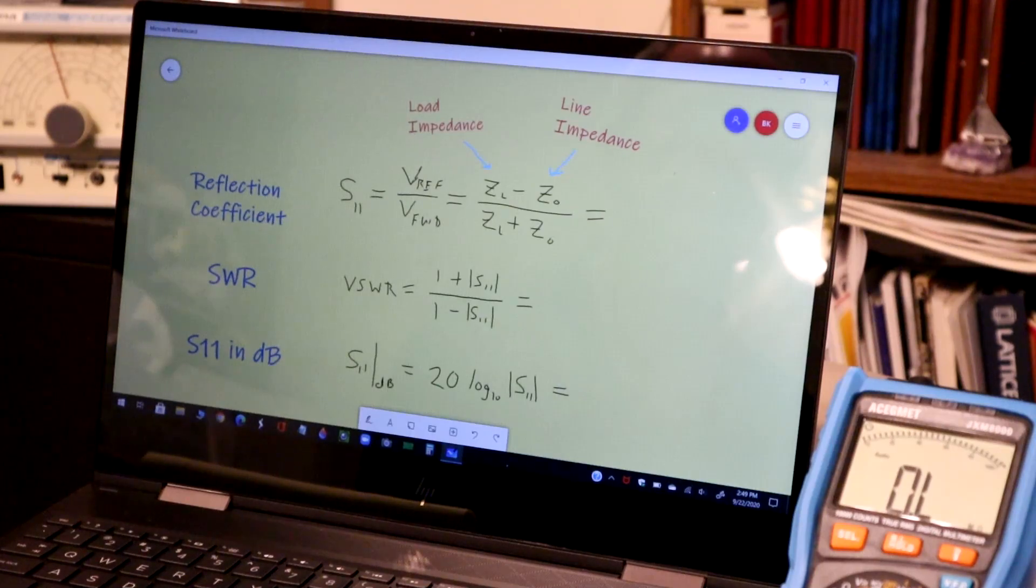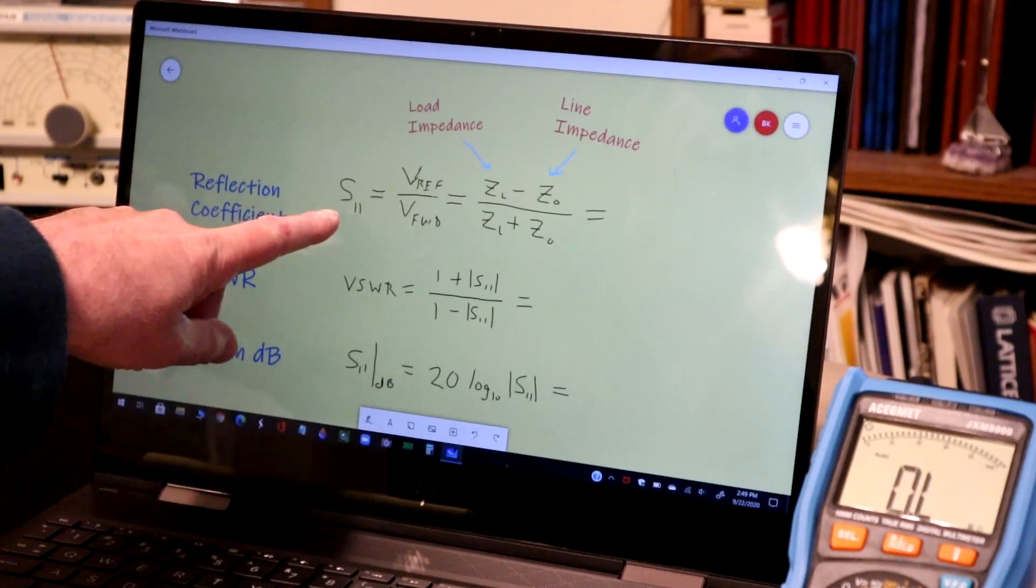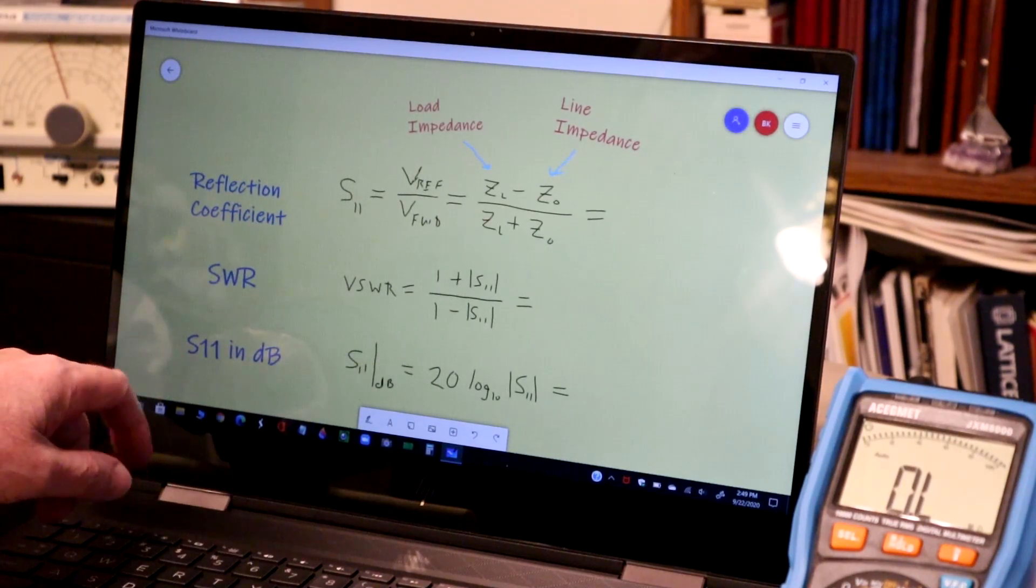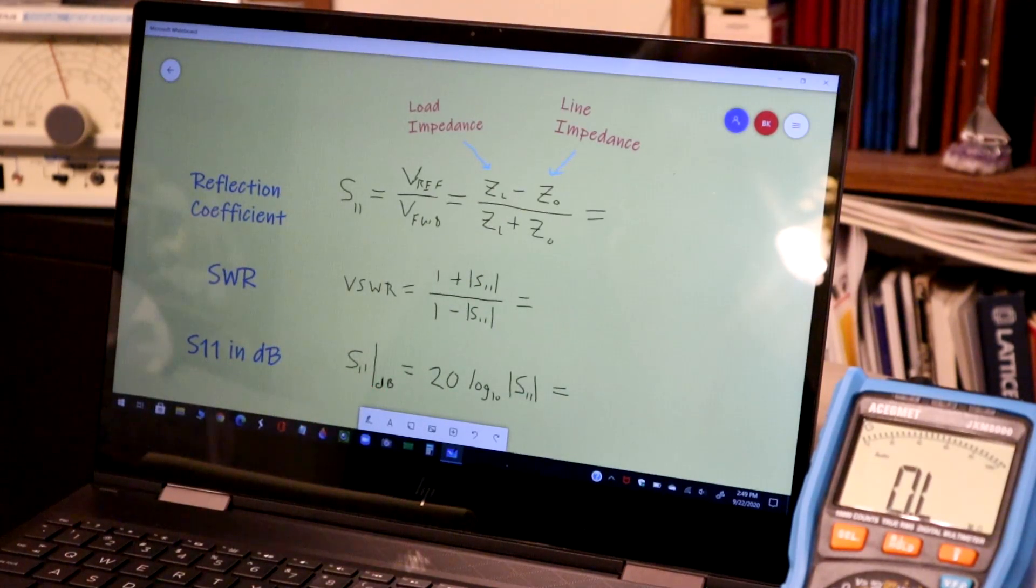We'll also use a little bit of radio frequency theory to talk about the parameters that the nano VNA looks at, in particular S11, and the VNA measures in dB so we've got to talk about that a little bit.